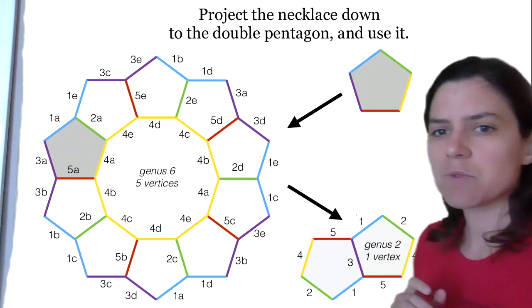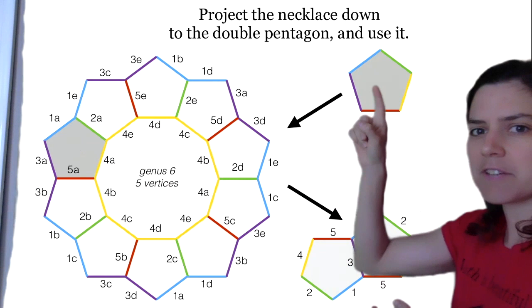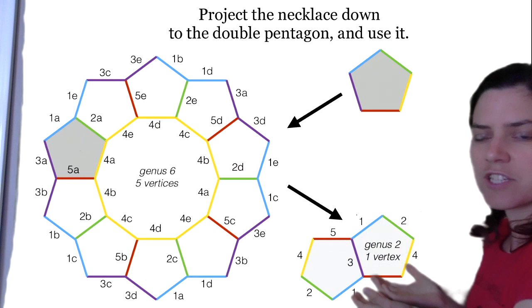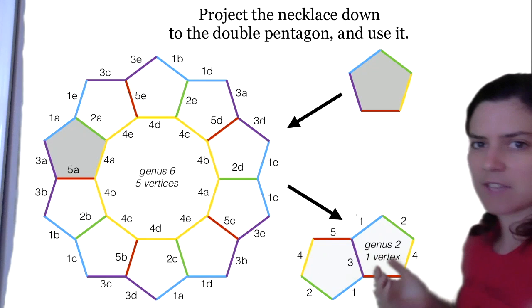We call that the necklace because it looks quite like a necklace, and that is the surface we use to understand periodic billiards on the Pentagon. But it's a bit big, so what we actually do is project down to the double pentagon. We unfolded the billiard table to the necklace, its translation cover, and then projected down. The necklace is a five-fold cover of the double pentagon, which is smaller — it has just genus two and one vertex — and we can do almost everything we want on the double pentagon.